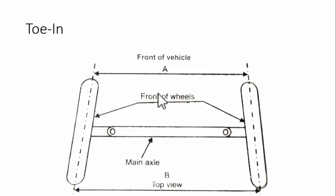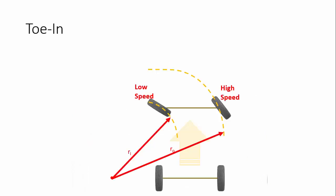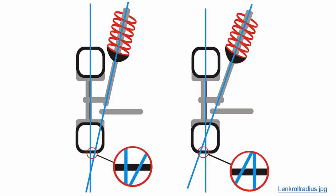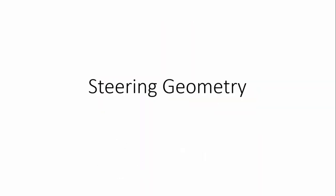When a vehicle takes a turn, the inner wheel has to make fewer rotations and the outer wheel has to make more rotations. So the inner wheel turns more and the outer wheel turns less, creating a toe-out condition. This toe-out happens only on turns and makes turning easier.